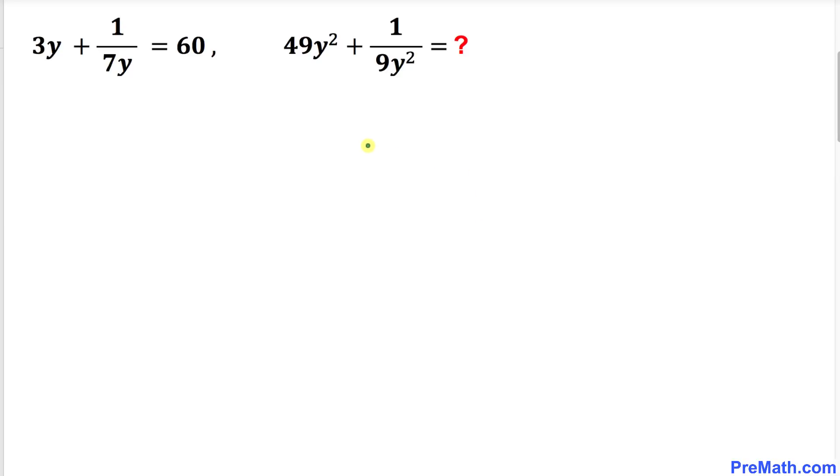Welcome to PreMath. In this video tutorial, we are going to solve this interesting problem: if 3y plus 1 over 7y equals 60, then find the value of 49y² plus 1 over 9y².